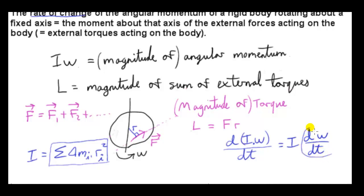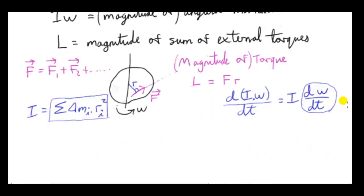Omega can change — it doesn't have to be constant. If we apply an external force to the body, omega could increase or decrease. If the body was at rest to begin with, applying an external torque will cause omega to go from zero to some new value. So we can now write down the principle of angular momentum: L, the sum of all the external torques, equals I times d omega dt.